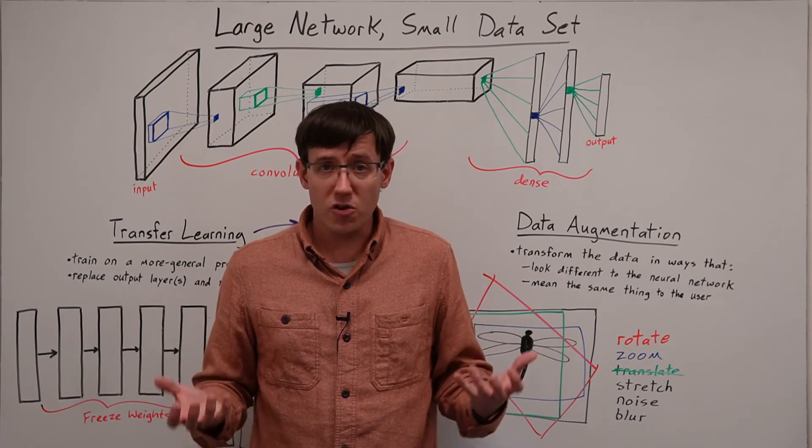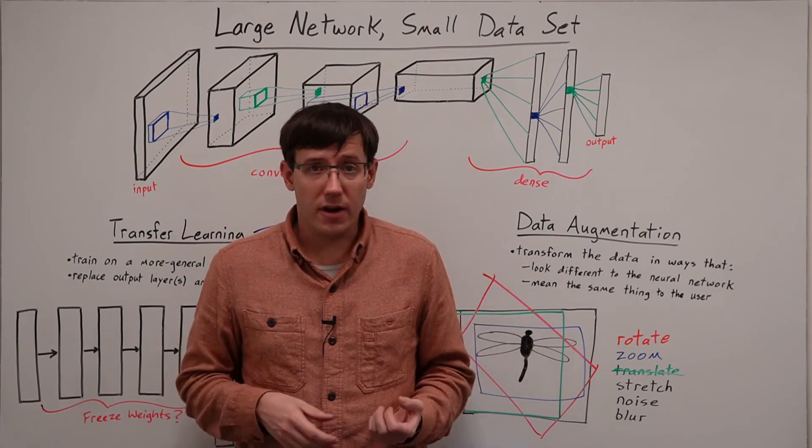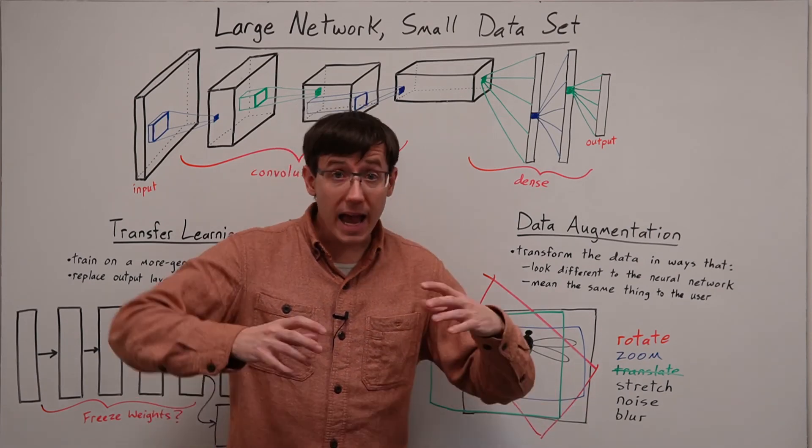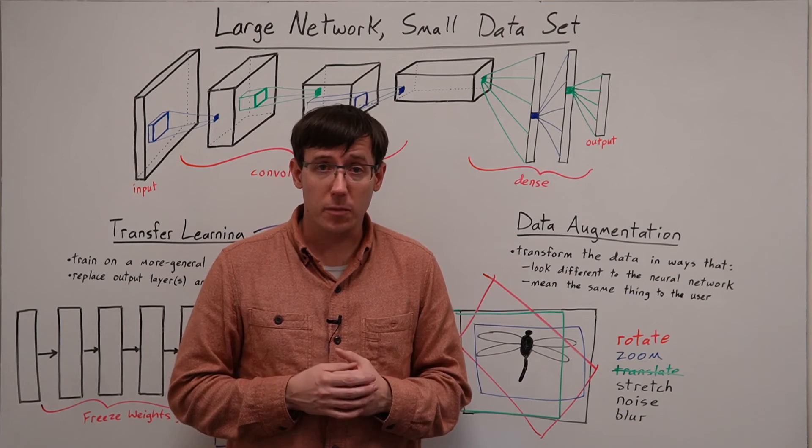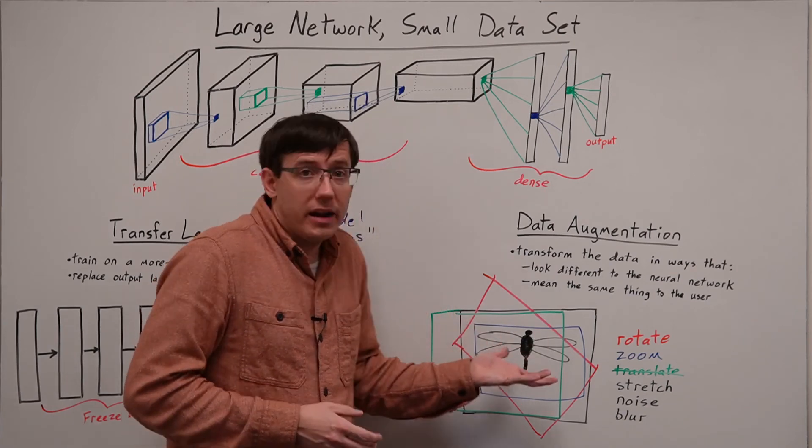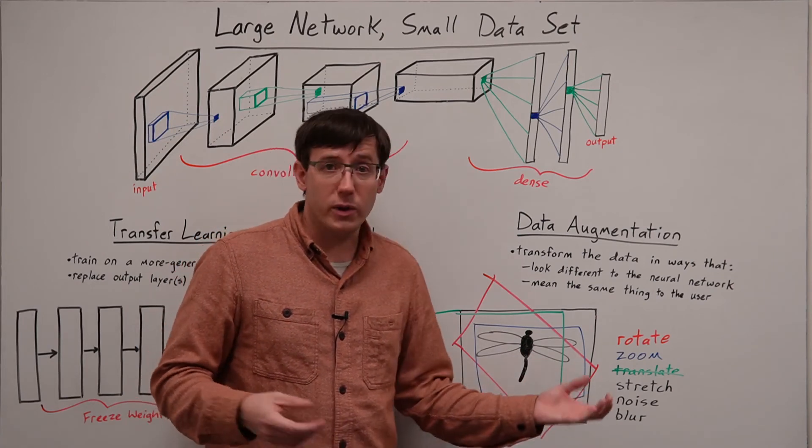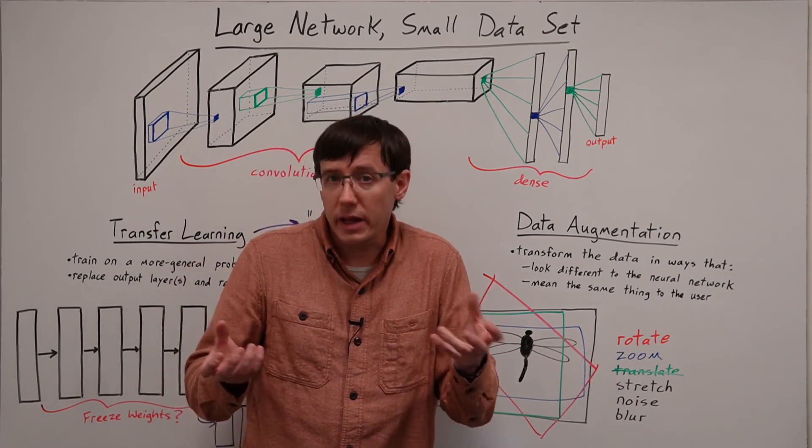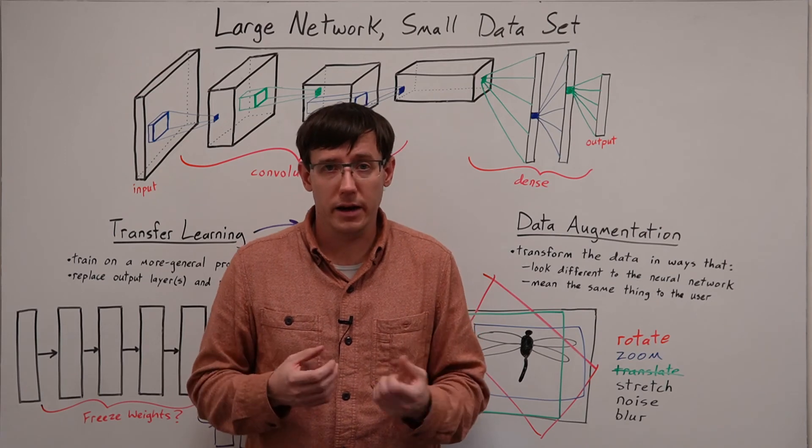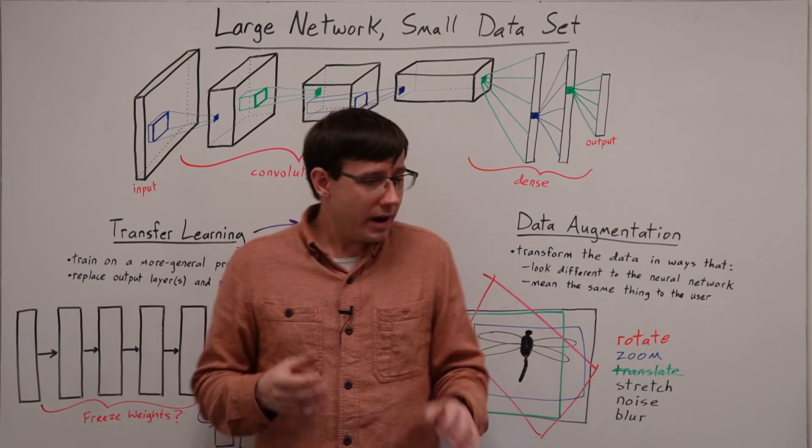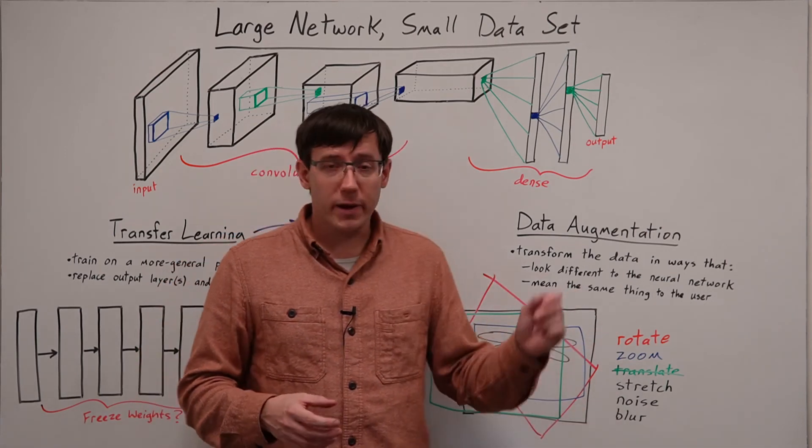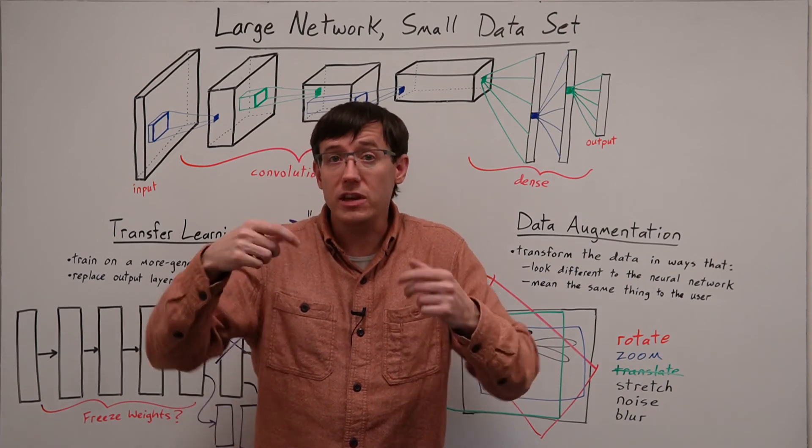But there are many other ways that we can modify the data, such as adding a little bit of random noise that is not enough to distort how we would perceive the picture. And likewise, we could blur the image slightly so that it's still recognizable. And so as long as any of these transformations are easy to compute, then whenever we're loading in a batch of data, we could choose some random transformations out of this set to apply to each of the input images.